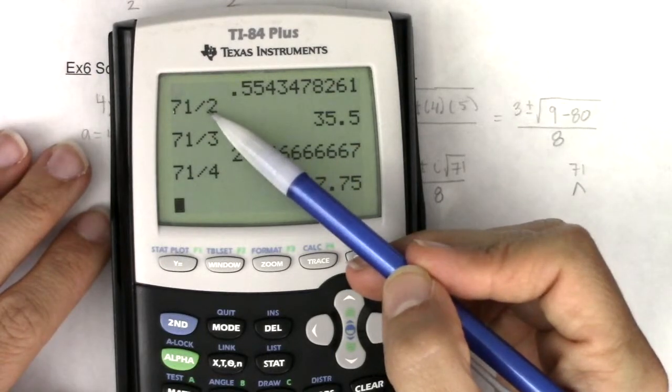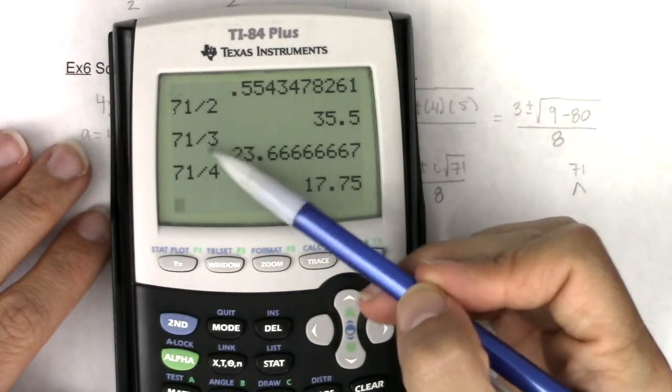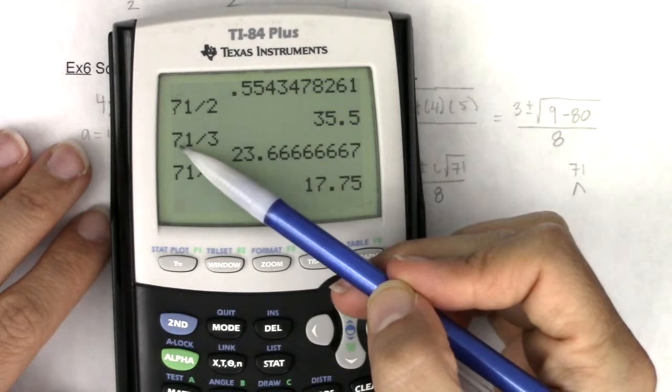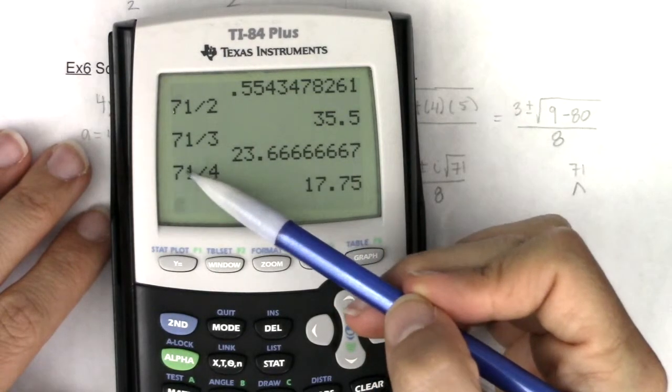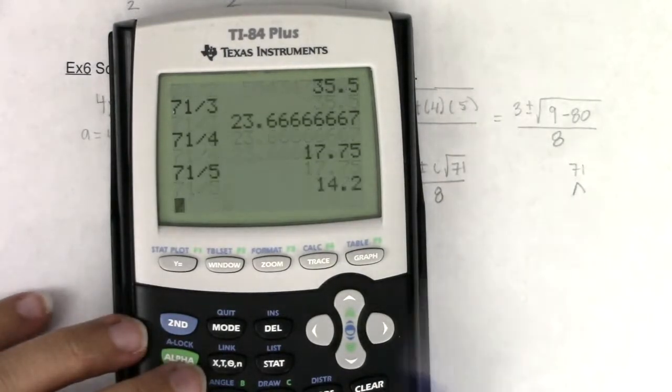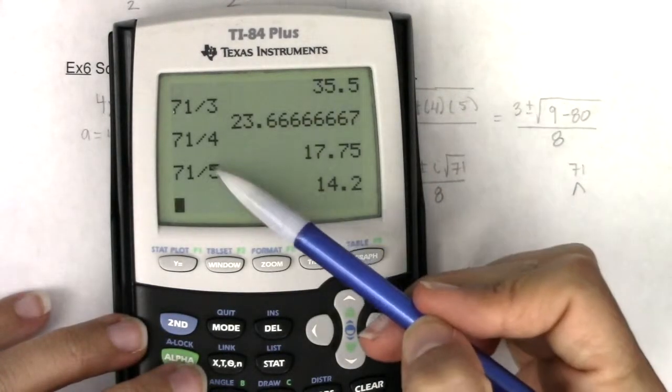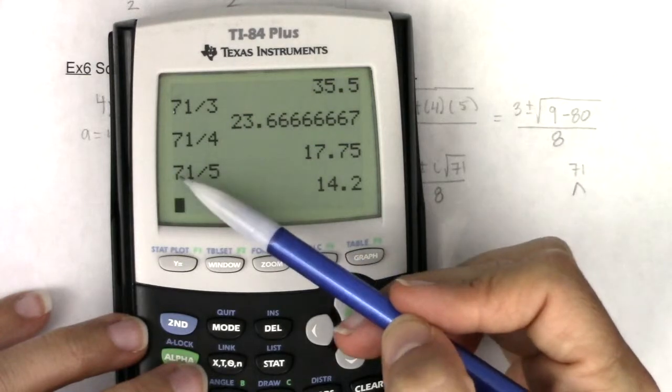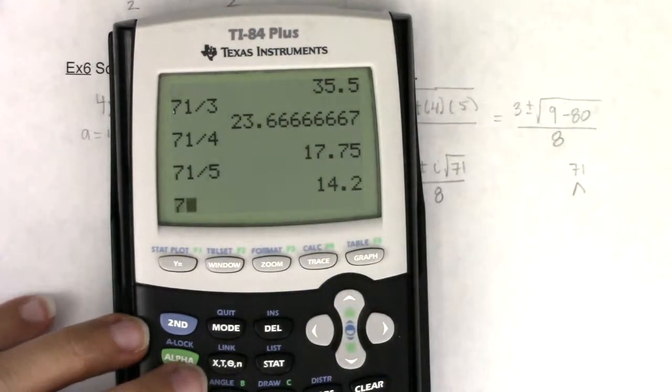2 squared is 4, not larger than 71. 3 squared is 9, not larger than 71. 4 squared is 16, not larger than 71, which means I keep going. So let me try 71 divided by 5. That doesn't work. 5 squared is 25, not larger than 71. Keep going.